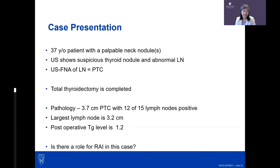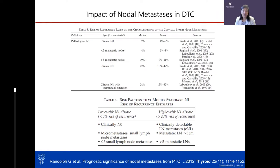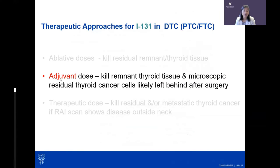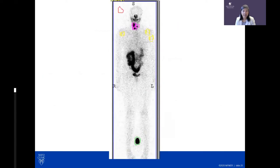Data from Greg Randolph at Mass General showed that when more than five lymph nodes are involved, or if nodes are palpable or easily seen on ultrasound, the risk for recurrent disease can be as high as 20 to 40 percent. In patients with many lymph nodes, there may be a role for adjuvant treatment — using iodine after surgery to target microscopic residual thyroid cancer cells and reduce recurrence.